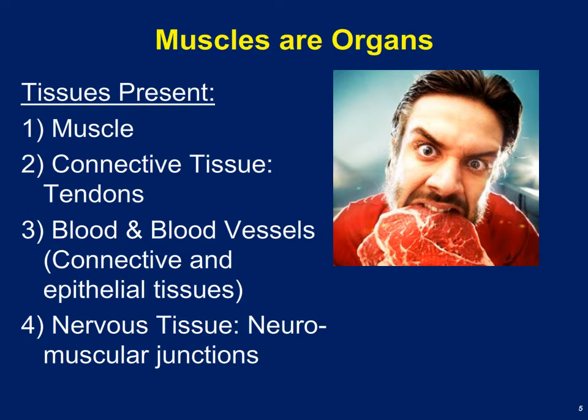Adipose tissue is yet another type of connective tissue found with muscle. Most muscles also require a good blood supply, so we have both blood vessels and blood, which consist of connective tissue and epithelial tissue. And remember that skeletal muscle only contracts when signaled by neurons, so we have a lot of nervous tissue associated with muscle as well.